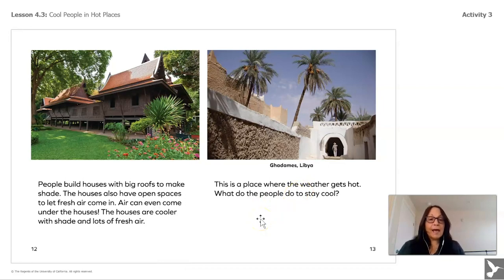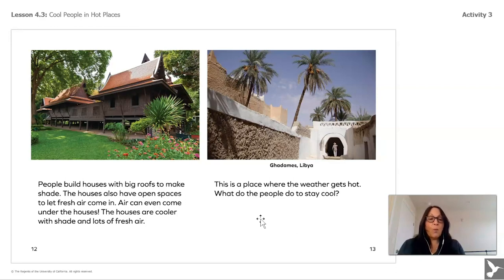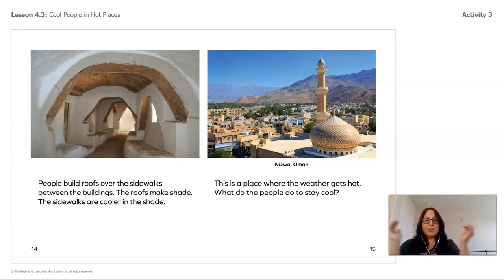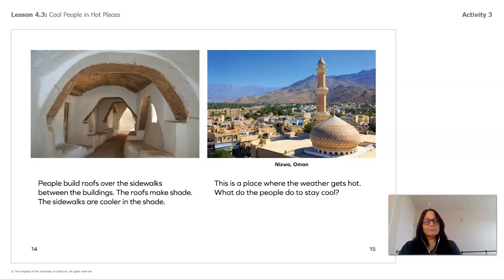On this side we're looking at Ghadames, Libya—a place where the weather gets hot. People build roofs over the sidewalks between the buildings. So when they walk on the sidewalks, they have roofs above them. The roofs make shade, and the sidewalks are cooler in the shade. That's very interesting—I didn't know that!